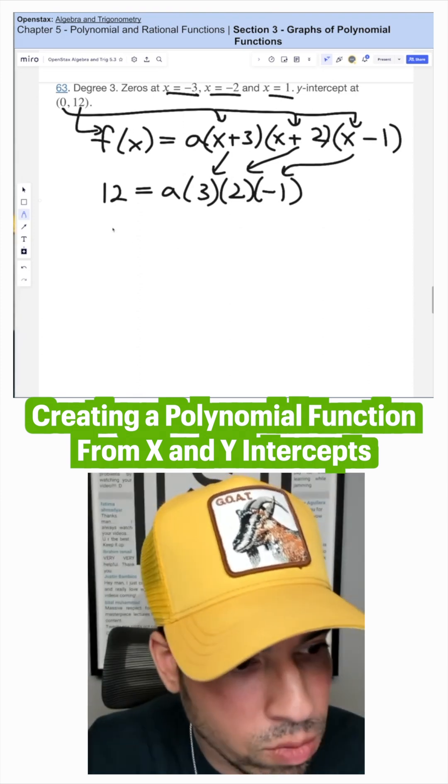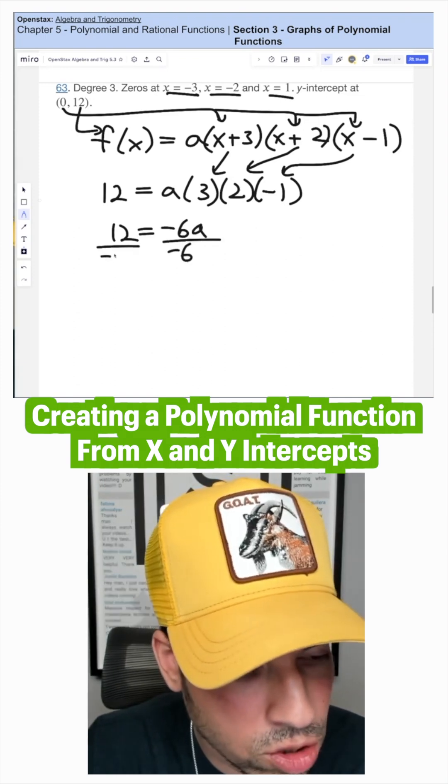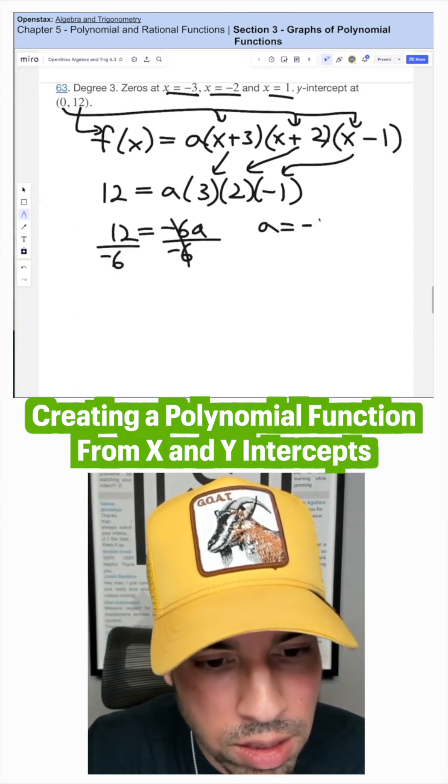Three times two times negative one is negative six. Divide by negative six, and we get a equals negative two.